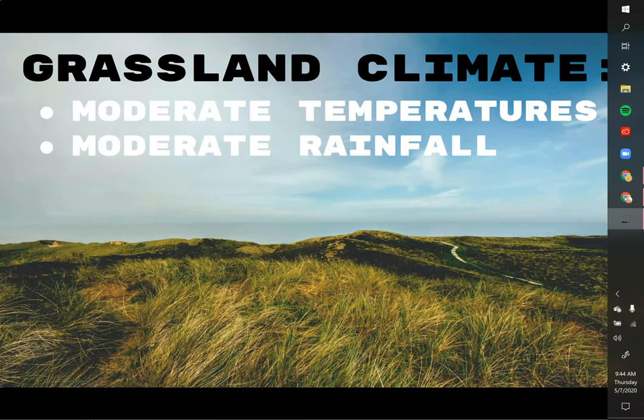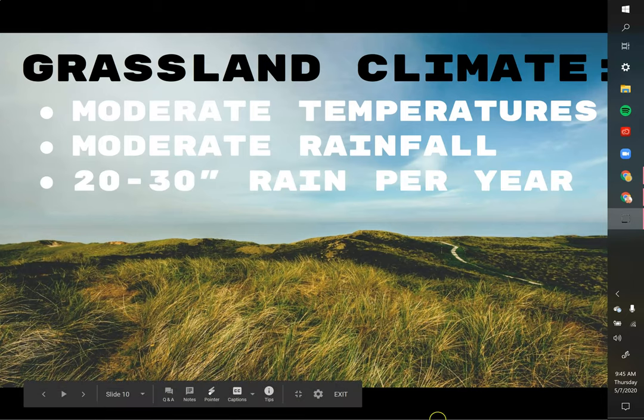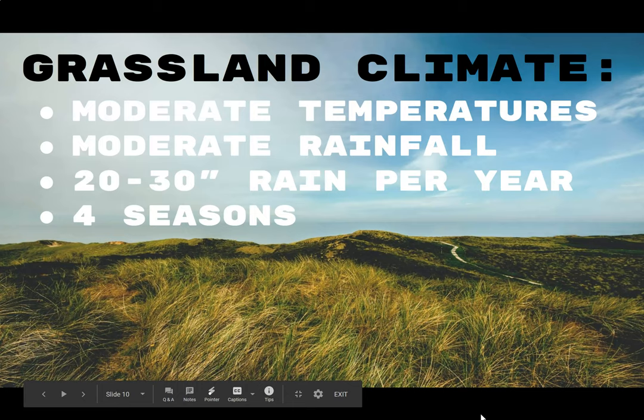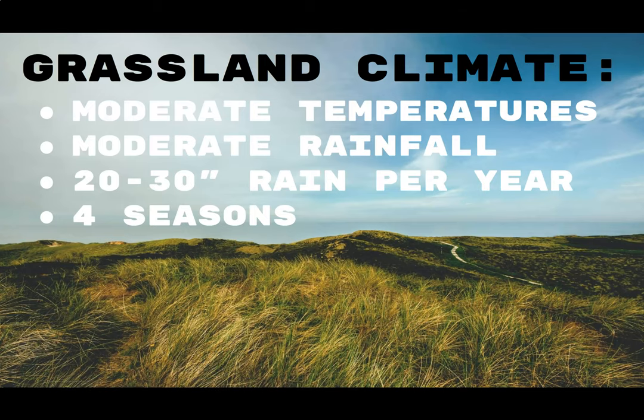The grassland also has moderate rainfall, getting between 20 and 30 inches of rain every year. Compared to the desert, that's double or triple the amount. But compared to something like the tropical rainforest, it's only about a third of the amount of rain. So grassland is a semi-arid or semi-dry climate.